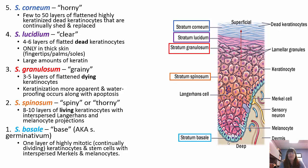The stratum granulosum is the grainy layer — three to five layers of flattened, dying keratinocytes. Keratinization is more apparent here, so waterproofing is starting to occur along with apoptosis as the cells begin to die. The stratum spinosum is the spiny or thorny layer with living keratinocytes, interspersed with Langerhans cells and melanocyte projections from the stratum basale.